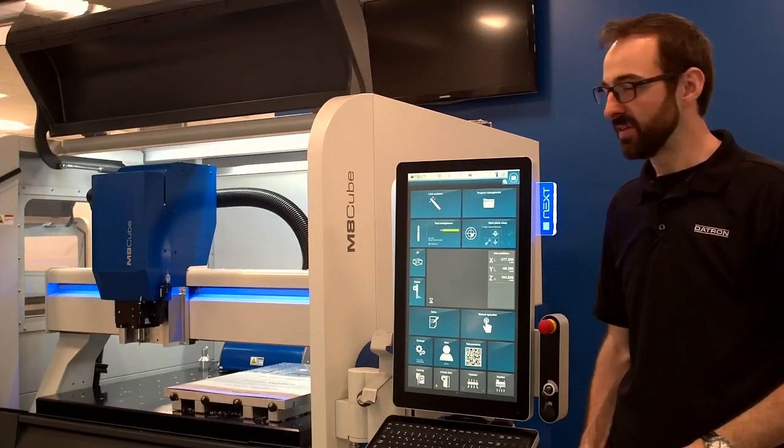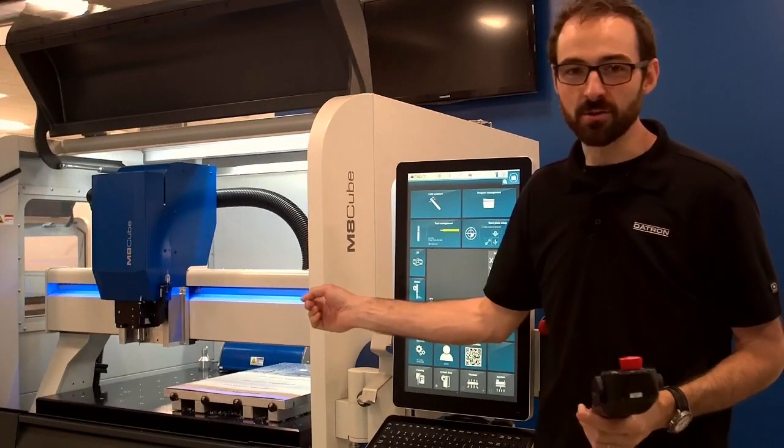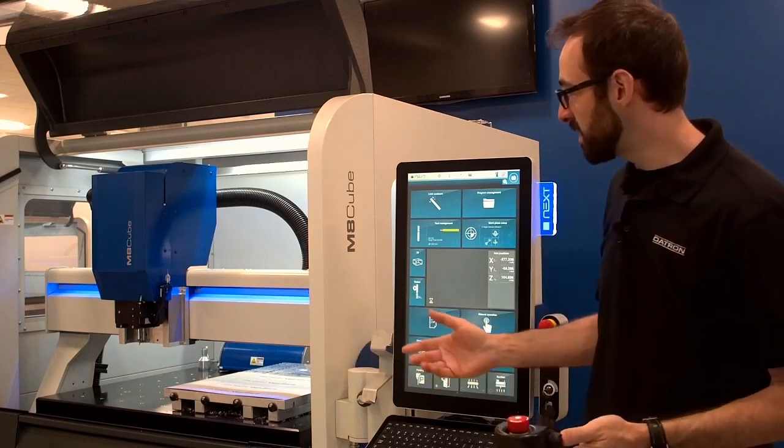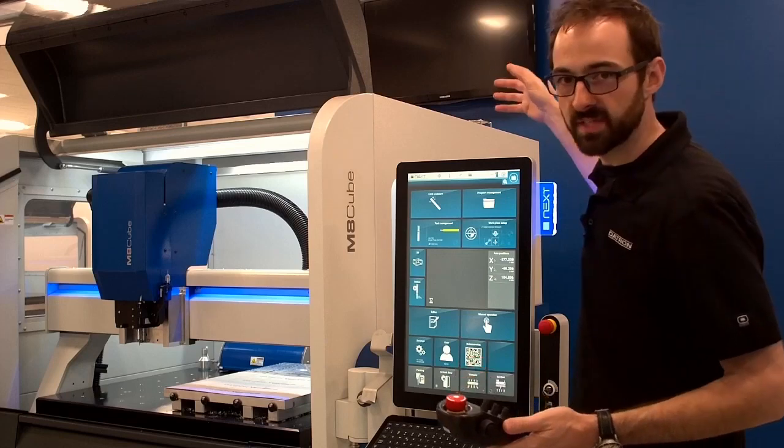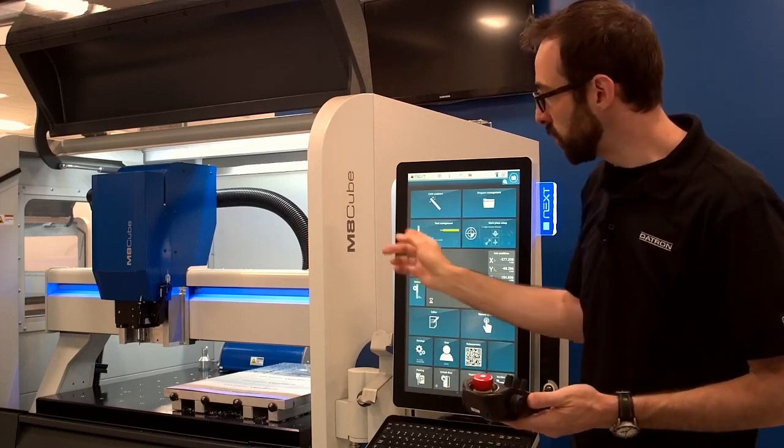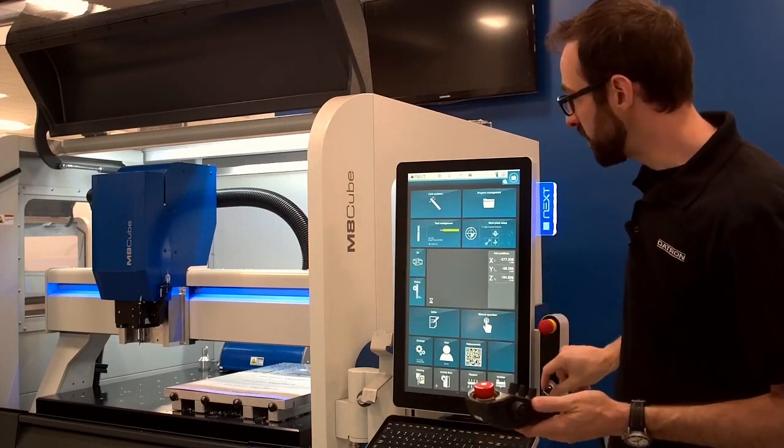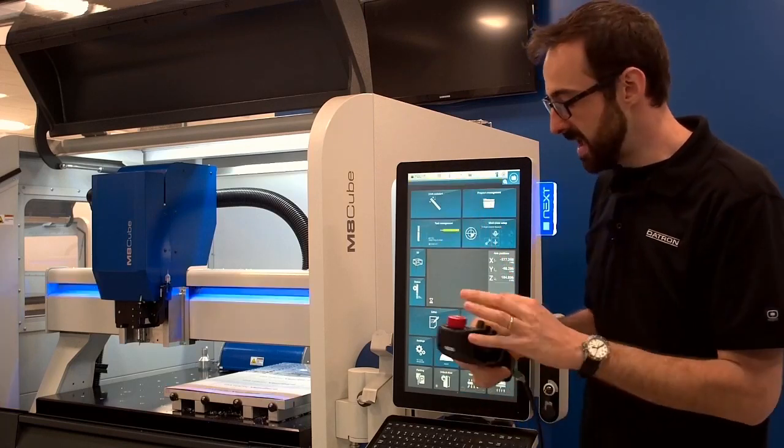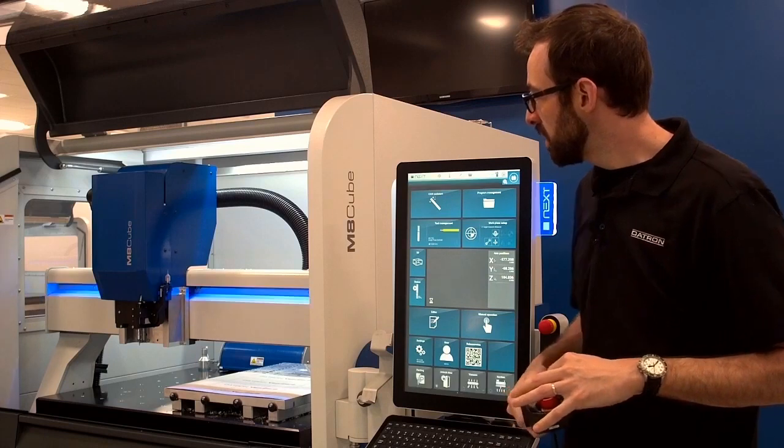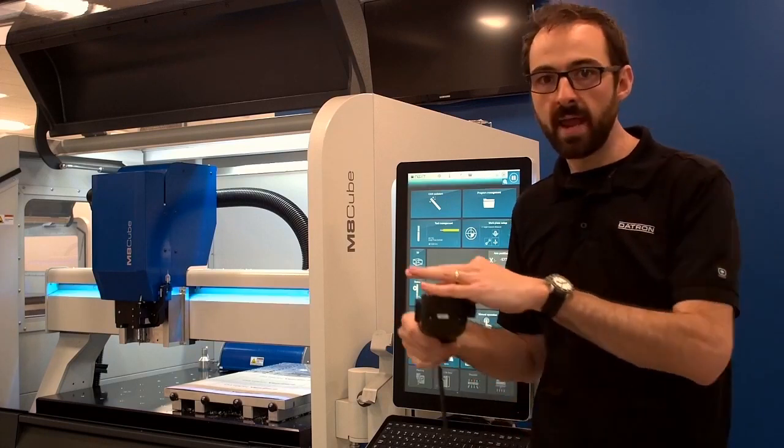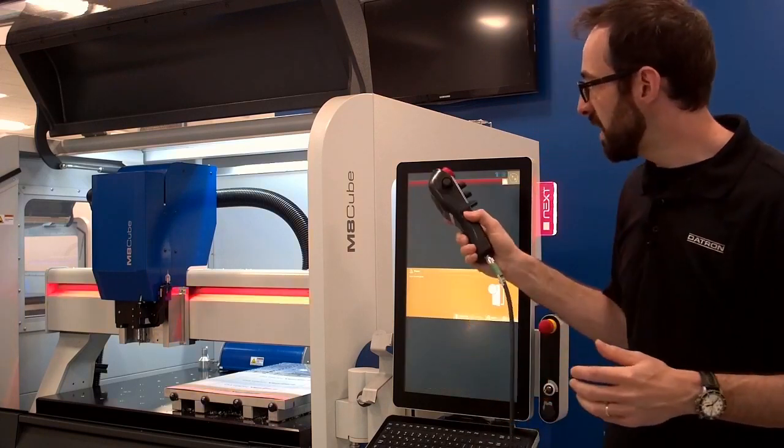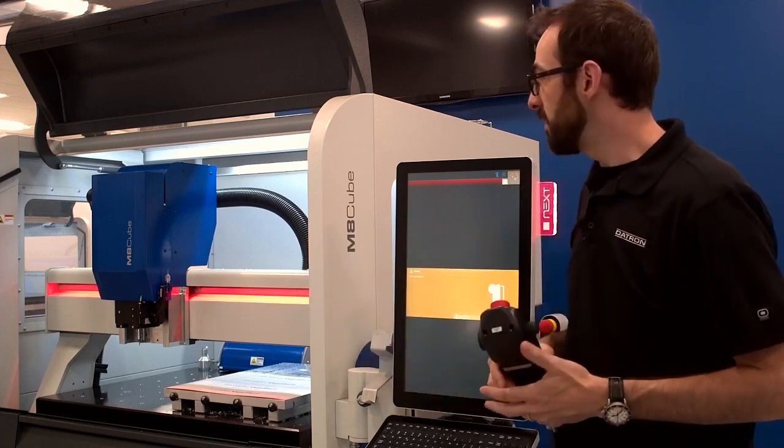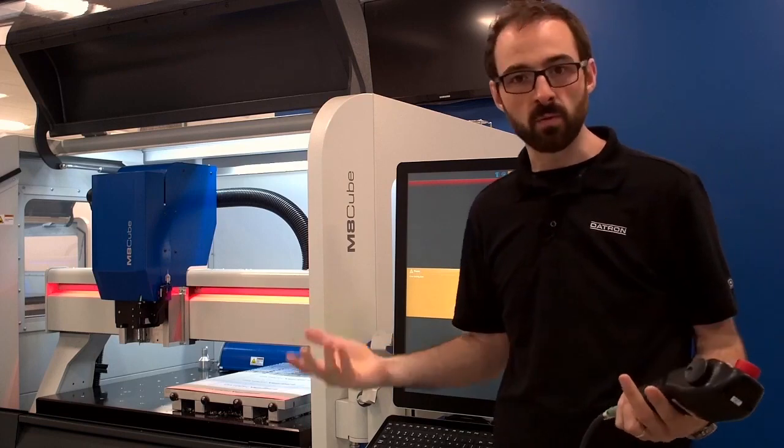One question we get really often is, are these lights just here to look cool? And the answer is no, they're actually functional. They're sort of like a status light you would see on top of a typical VMC. Blue means ready. Yellow for manual override. Light-colored blue for hand-jogging the machine. Red to indicate an error or fault. And green, the color of money, that's when we're making chips.